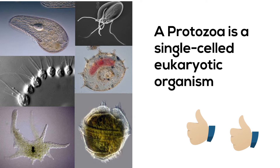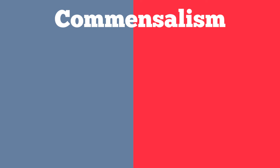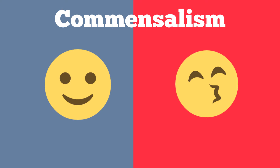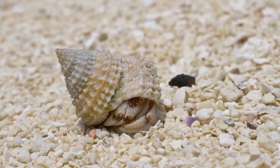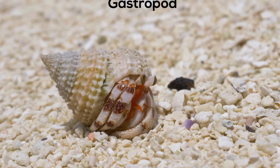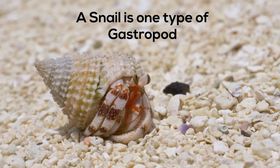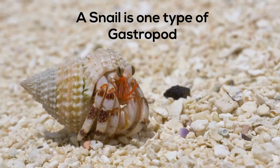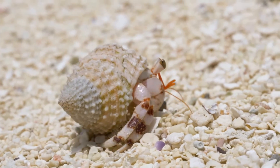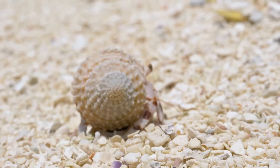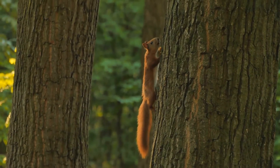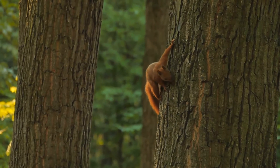Next is commensalism — one benefits and the other is neither helped nor harmed. Hermit crabs live in the shells of once-abandoned snails. This relationship helps the hermit crab because it gives them some protection, but these snails don't really care. Next, squirrels live and stay in trees for protection, yet the tree is neither helped nor harmed.